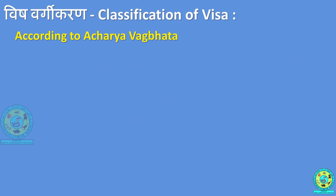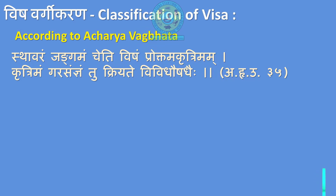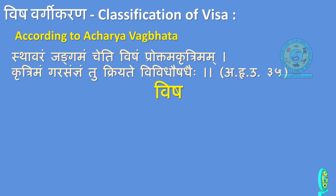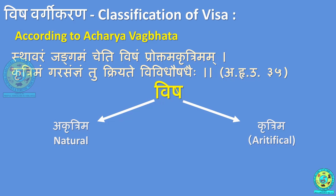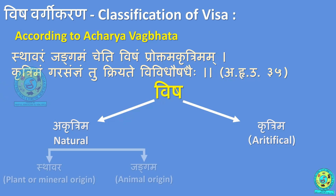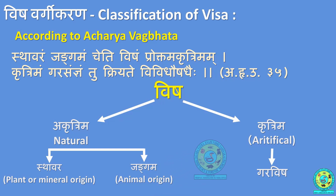According to Acharya Vagbhatta, reference Ashtangarudaya Uttara Tantra Chapter 35: 'Sthavaram Jangamaam Cheti Visham Prokhtam Akritrimam. Krittrimam Garasanyam tu Kriyate Vividaushadaihi.' Vagbhatta classified Vishah broadly into two categories: Akritrimavishah — poisons which are naturally available — further classified into Sthavara and Jangama; and Krittrimavishah, called Garavisham, produced by a combination of different Aushadha or Dravyas.